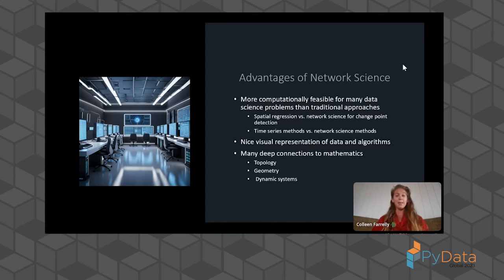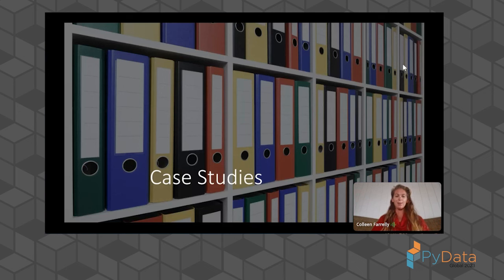In addition, networks allow for a very nice visual representation of data and algorithms as well as what's going on within the algorithms. So when we're looking step by step at how a network is changing or how different structures or spread are going on within a network, we can visualize each of these steps as output to be able to see how things are being fit over time. In addition, network science shares many deep connections to mathematics, including topology, geometry, and dynamic systems theory. And this allows us to leverage a lot of different tools to understand what's going on in the network and be able to come up with new algorithms that we can run for specific purposes. Let's dive into a couple of case studies and see network science in action.